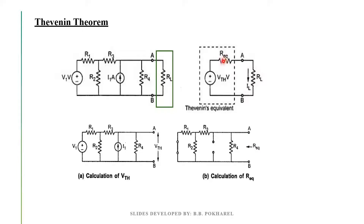The R equivalent value is found with the sources deactivated. What happens is that some voltage sources will be shorted, and some current sources will be opened. I1 means current source, which will be open. And V1 means voltage source, which will be short. Now, we can simply find the equivalent resistance.